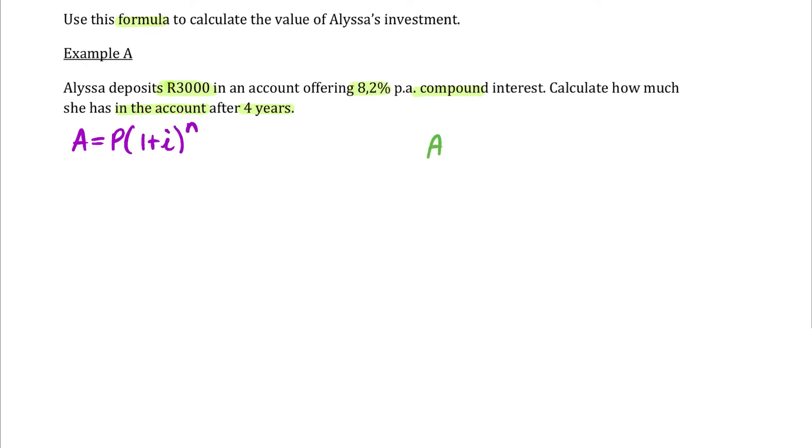As we read the story, well, they asked us for the total amount of money in the account. That's an A value.